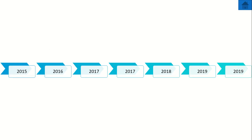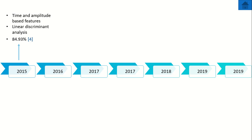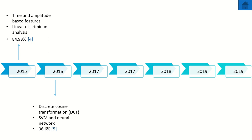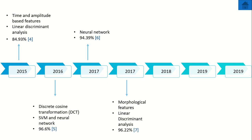The literature review shows work done on ECG biometrics in past years. In 2015, an ECG authentication system used time and amplitude-based features with linear discriminant analysis as a classifier, achieving 84.93% accuracy. In 2016, discrete cosine transformation was applied on ECG signals; SVM and neural network were used as classifiers, achieving 96.6% accuracy. In 2017, a neural network classifier yielded 94.39% accuracy. Also in 2017, morphological features were used for distinguishing classes with linear discriminant analysis, achieving 96.22% accuracy.